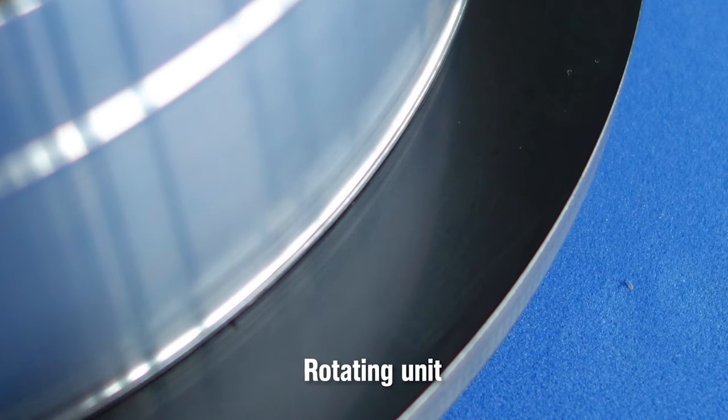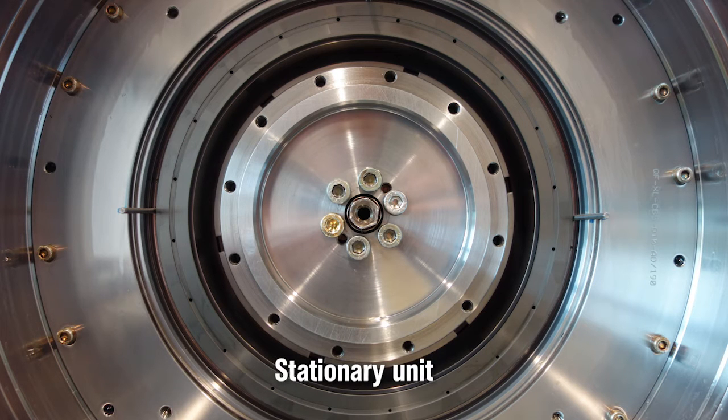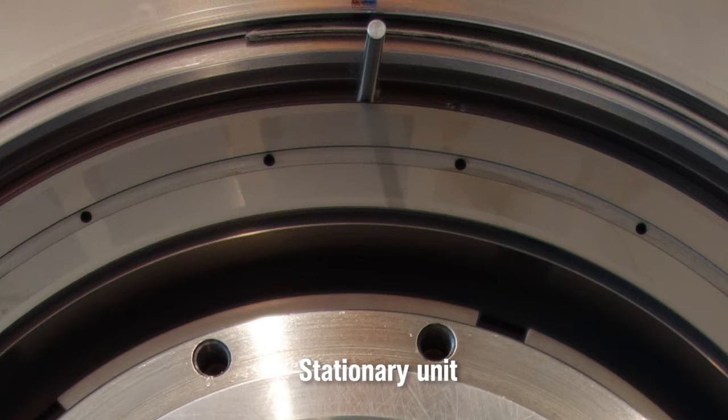The COBA seal is reliably oil-tight. The stationary unit is in perfect condition. There are no traces of oil on or between the contact surfaces of the seal.